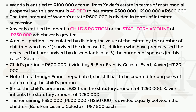A child's portion is calculated by dividing the total value of the estate by: (1) the number of children who survived the deceased, (2) children who predeceased but were survived by descendants, plus (3) the number of spouses. Here there is one spouse, Xavier. So we divide 600,000 by five — Ben, Francis, Celeste, Yvette, and Xavier — giving us 120,000 rand.